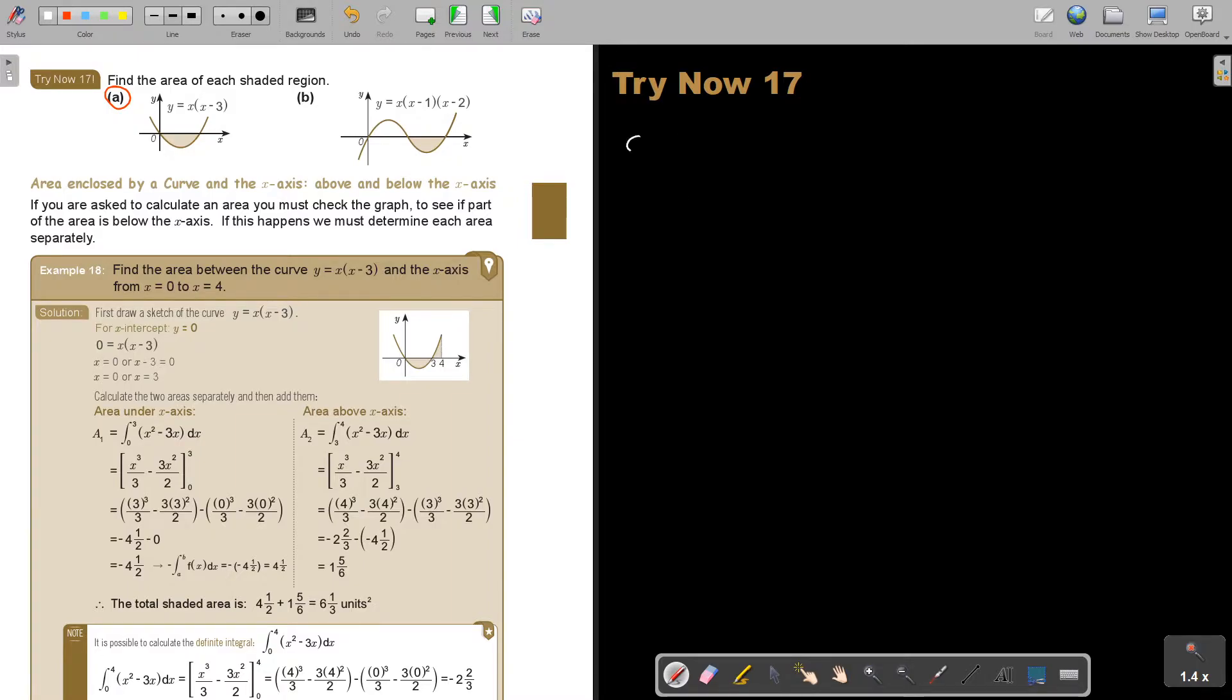Let's start. Number A. I like always first to write down just my formula, my function. Find the area of each shaded region. Now, if you want to see where it's cutting the x-axis, so to find the x-coordinate, we say to find the x-coordinate, make y zero.